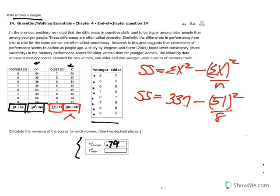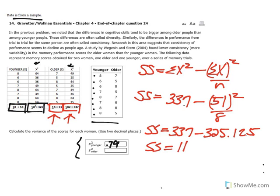Again, those values are coming from here and here. And now if we, in our calculators, take 51 squared divided by 8, we then get SS is equal to 337 minus 325.125 and that then leads us to an SS equal to 11.875.